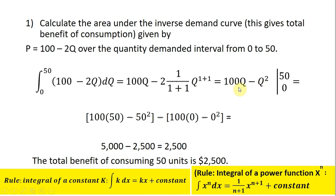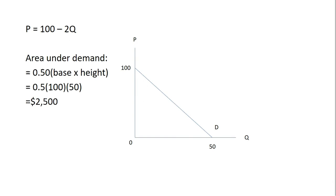We evaluate 100Q minus Q squared between 0 and 50. Evaluating at 50 and subtracting the expression evaluated at 0 simplifies very nicely to 2,500. So the total benefit of consuming 50 units is $2,500. We can verify this geometrically: the definite integral calculates the area between the demand curve and the horizontal axis between 0 and 50 units — a triangle with area equal to one-half base times height.